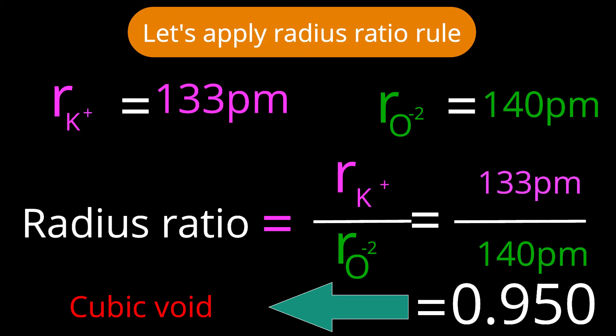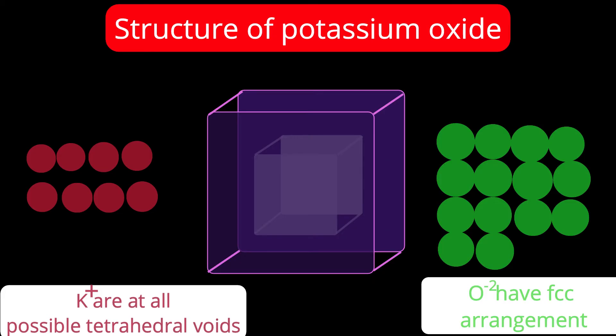It means here we are coming across problem to apply radius ratio rule. Let us see what is the reality of the structure. Interestingly, this structure is exactly opposite to the structure of fluoride. Last time we studied in case of calcium fluoride, calcium ions were with FCC arrangement, and fluoride ions were occupying cornered positions of the inner cube. This means tetrahedral voids were occupied by fluoride ions.